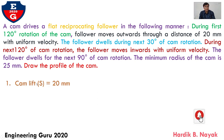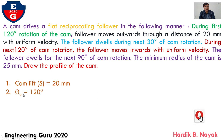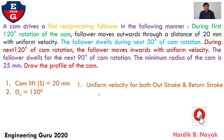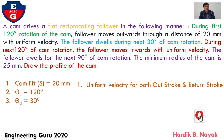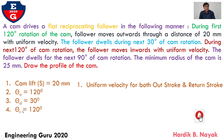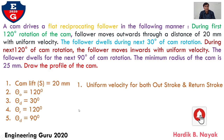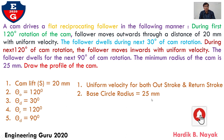Here, cam lift S equals 20 mm given. Theta O, meaning out stroke, equals 120 degrees. Uniform velocity for both out stroke and return stroke. Theta D, meaning dwell, equals 30 degrees. Theta R, meaning return stroke, equals 120 degrees, and final dwell equals 90 degrees. Base circle radius equals 25 mm.